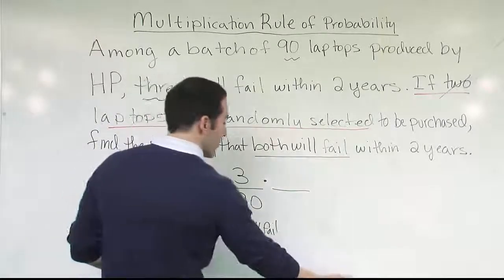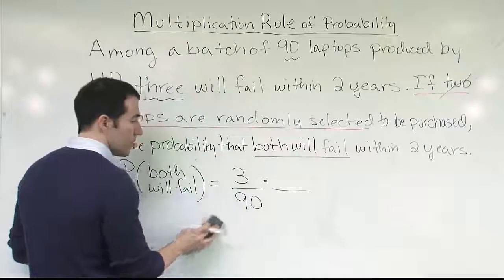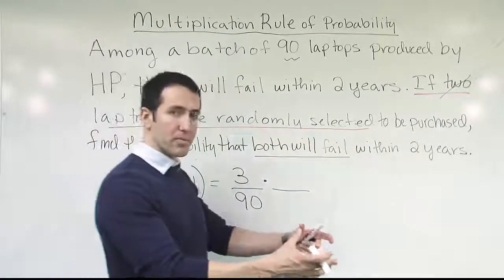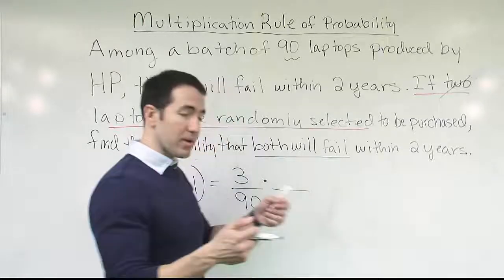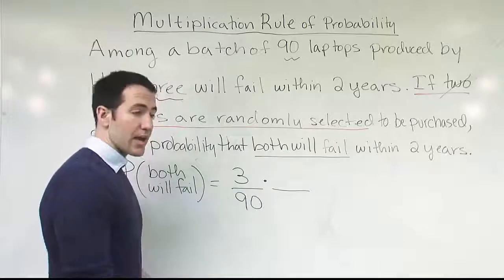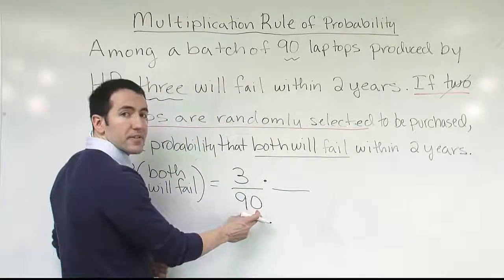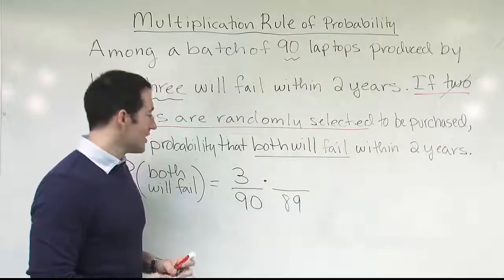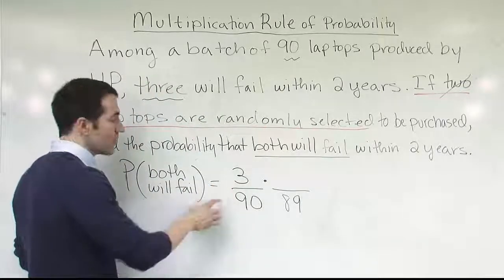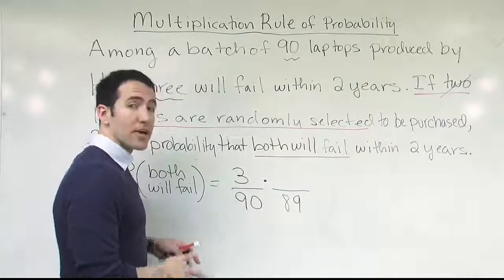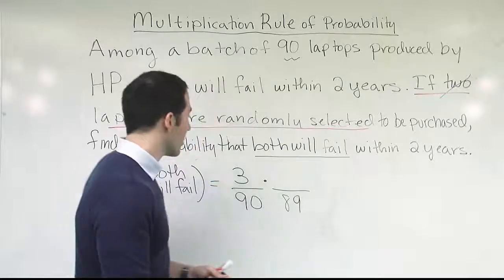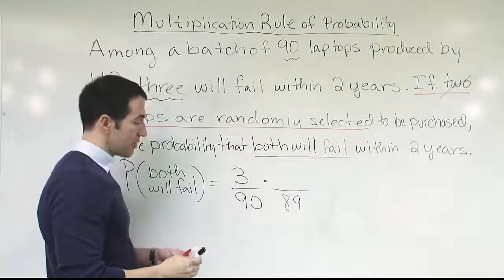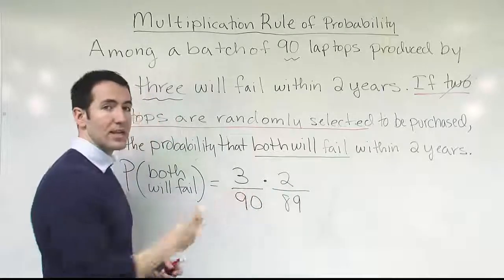Now for the second part — this is where the dependent scenario matters. We went to the shelf; the probability of getting a defective laptop was 3/90. I picked that laptop up and put it in my cart. When I go back to the shelf, the total number of laptops is different — there are only 89 laptops to choose from. Also, I'm going to pretend that the first laptop I took was defective. So when I look for a defective laptop now, there are no longer three defective laptops — only two are left because one is in my cart. The chance of getting a defective laptop is now 2 over 89.